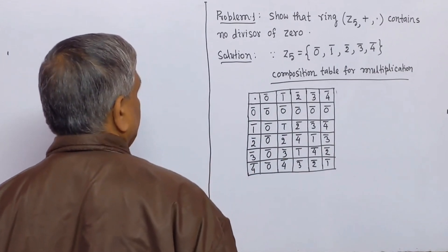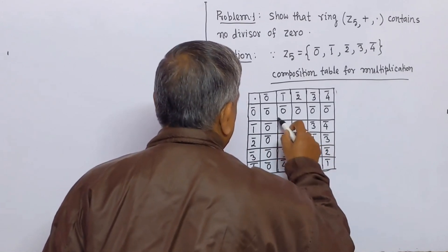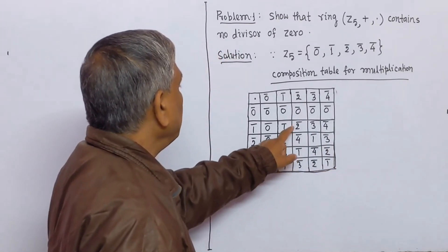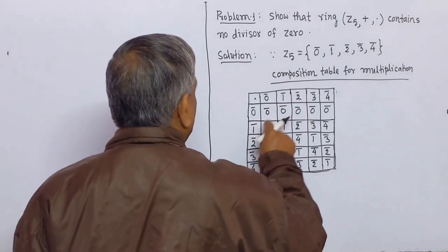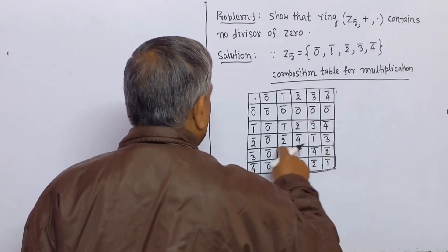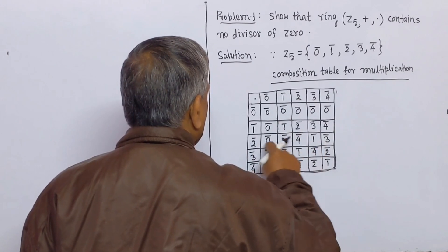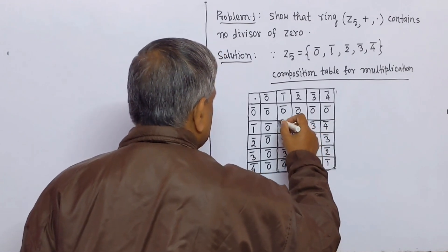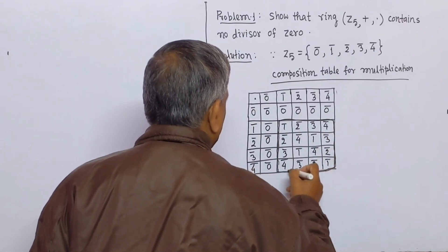Here we see that this part represents the multiplication of two non-zero elements of Z5. Here 1-bar multiplied by 1-bar is 1-bar, 1-bar multiplied by 2-bar is 2-bar. Similarly, 2-bar multiplied by 1-bar is 2-bar, 2-bar multiplied by 2-bar is 4-bar, 2-bar multiplied by 3-bar is 1-bar. In this part we do not see any zero element.